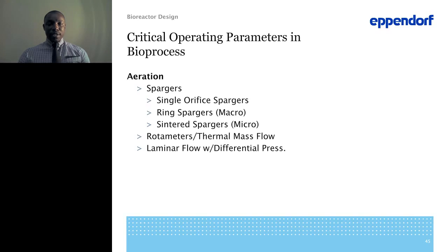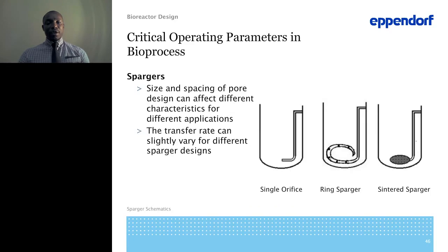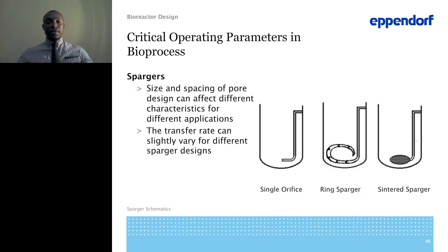There are different apparatus used to deliver gas into the culture. On the left is a single orifice sparger — a single hole used to deliver gas to the culture. In the center is a ring sparger, primarily used for more shear-sensitive cell lines to deliver a bigger bubble, which helps with shearing. On the right is a sintered steel sparger, primarily used for more robust cell lines that are not as shear sensitive, mainly in fermentation processes.